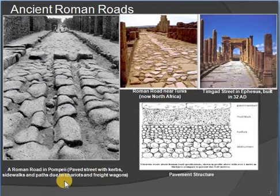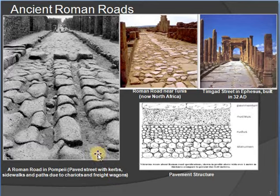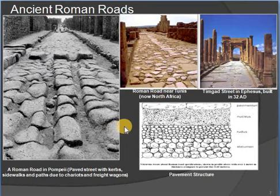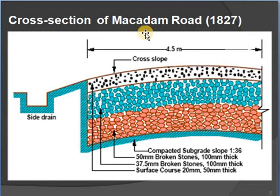Roman roads used curbs, sidewalks, and paths designed for chariots and light wagons. On those roads there was no need for cars or lorries — they used wheeled vehicles like chariots.